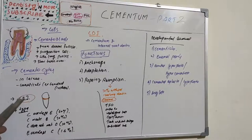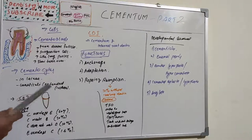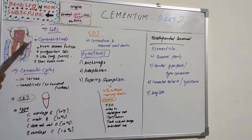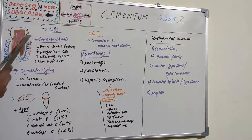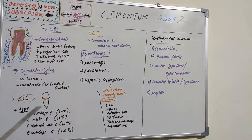The cemento-enamel junction (CEJ) is the boundary between the tooth crown and root clinically, but anatomically it is the junction between enamel and cementum. It has four basic types: the most common is cementum overlapping enamel at 60%; cementum and enamel meeting at a point at the cervical end; enamel and cementum not meeting at 10%; and the least common at 1.6% is enamel overlapping cementum.